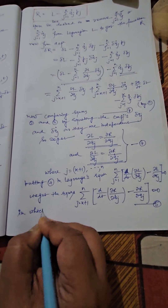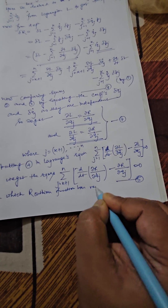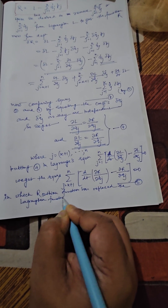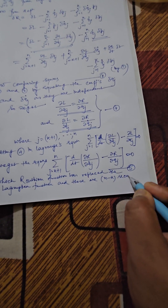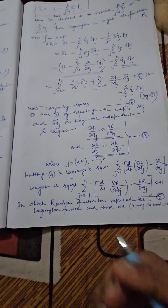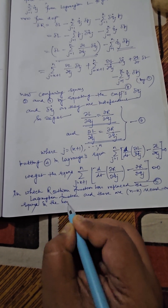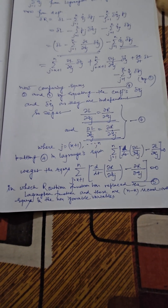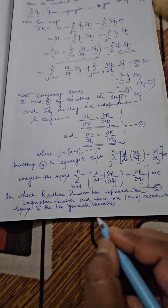These are n minus k second-order equations in terms of non-ignorable coordinates, because j runs from k+1 to n. The ignorable variables are already eliminated. In this manner, with the help of the Routhian procedure, we can eliminate all possible ignorable coordinates from the equations of motion.